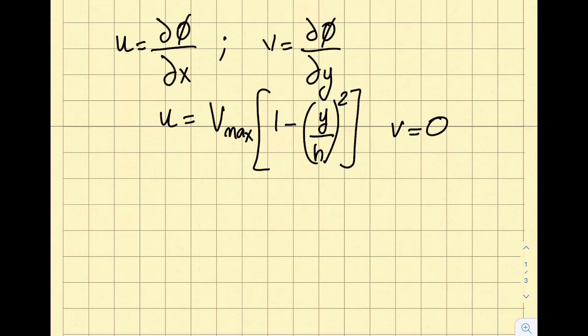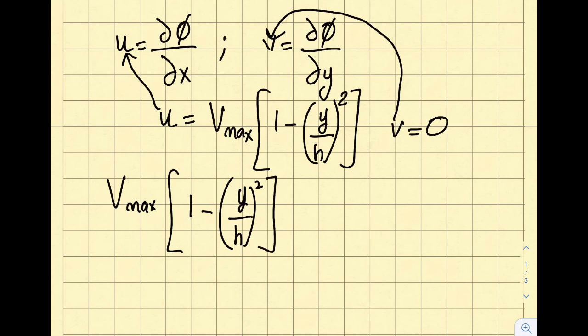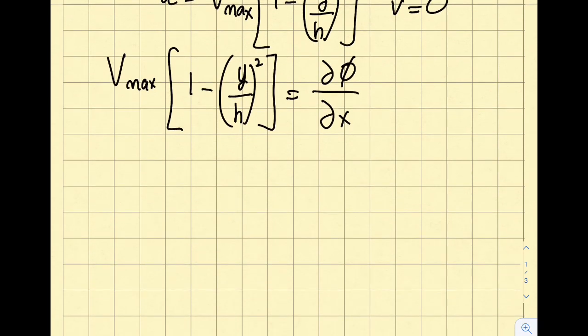I have an option over here for how I should start this approach, just like I did in the stream function concept. I can start with this and go ahead. I usually start by u, so V max times 1 minus y over h squared will be equal to del phi del x. From here, in order to find the velocity potential, I'm going to move this term to the left-hand side of the equation and take the integral of both sides.